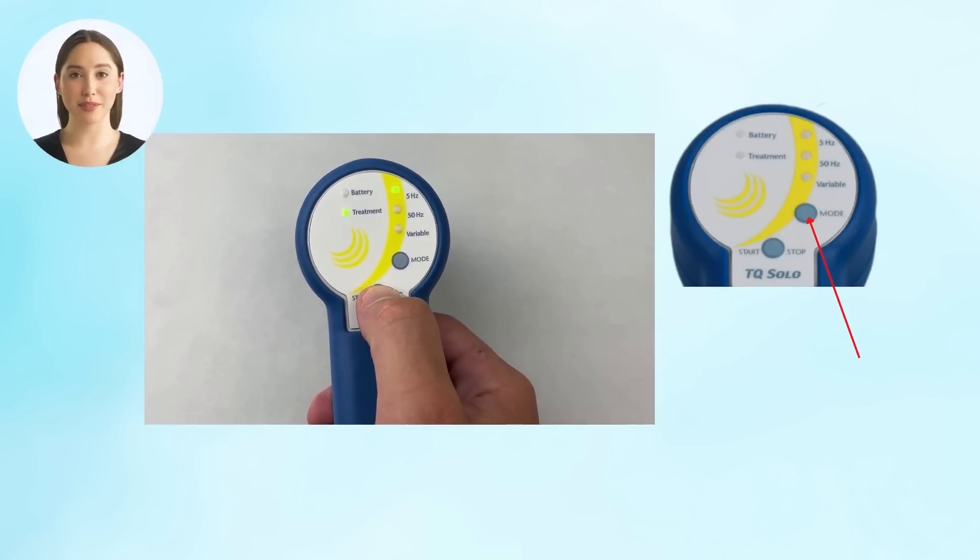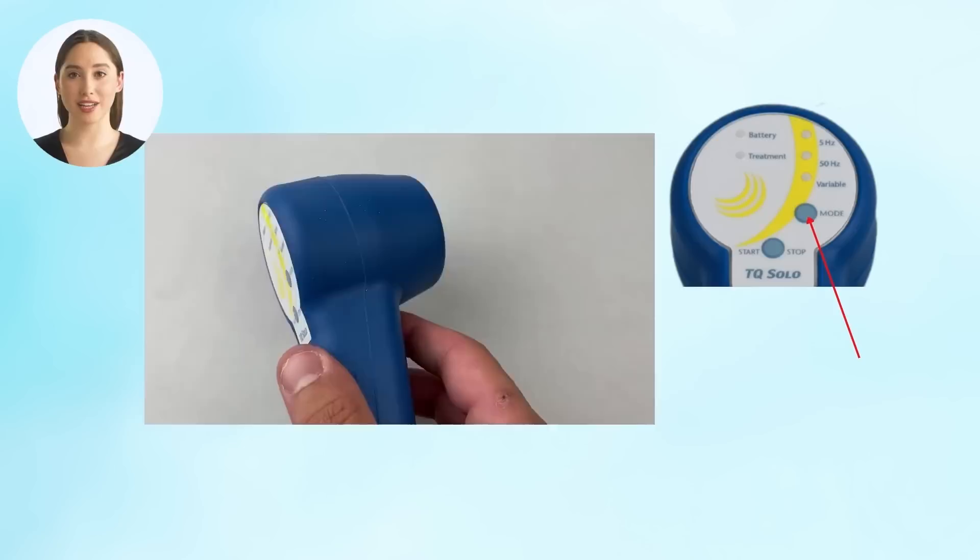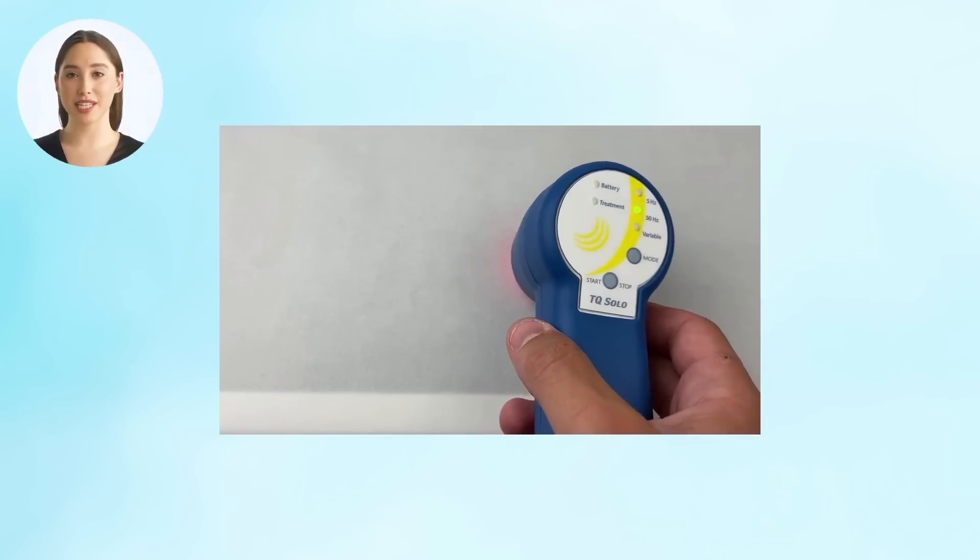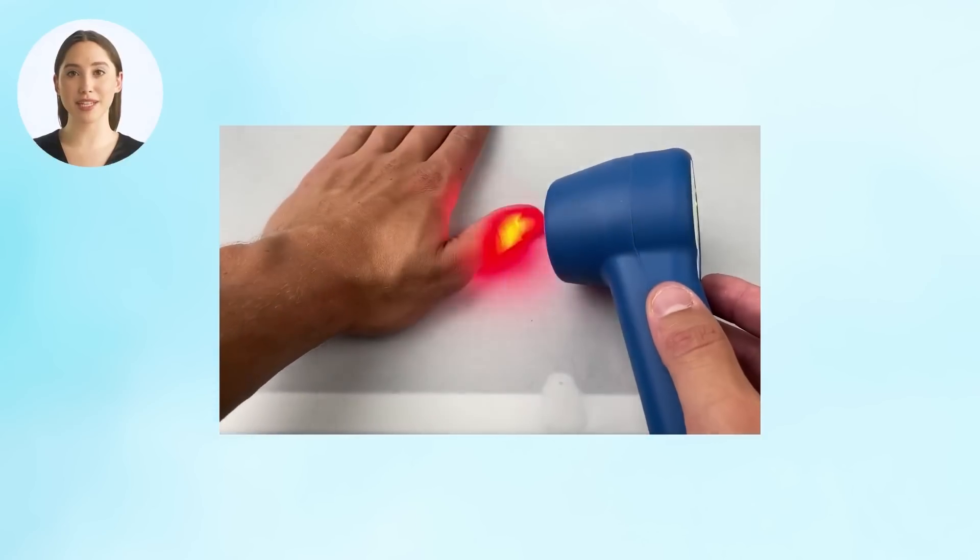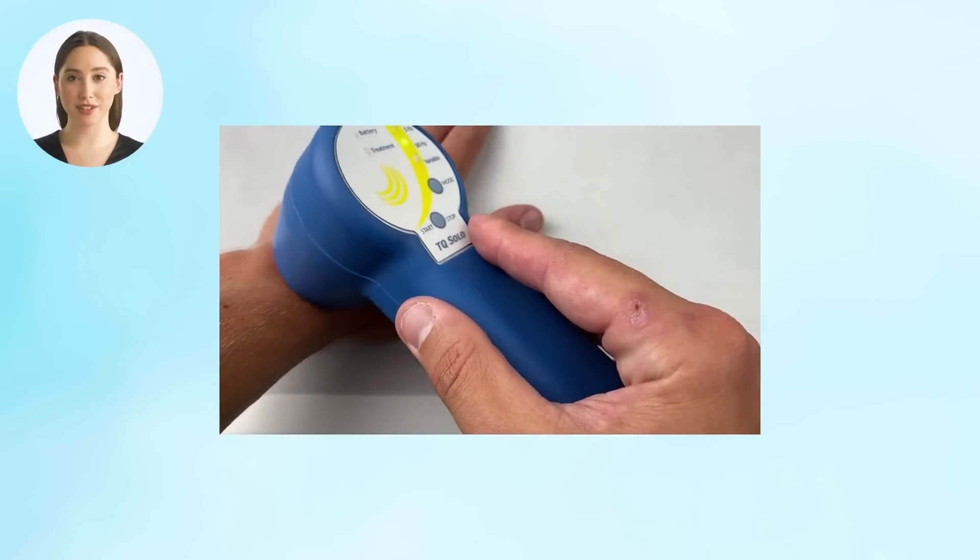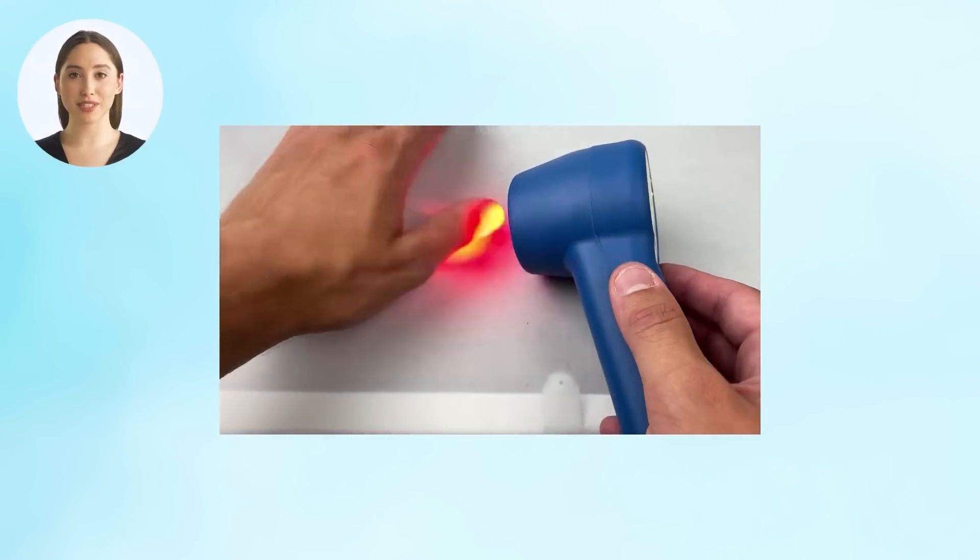You will notice red light coming from the device, signaling it is on and running. The treatment light will flash for the duration of the session, and each mode will run for 5 minutes. When completed, the device will make a ring 3 times, signaling the mode is completed.